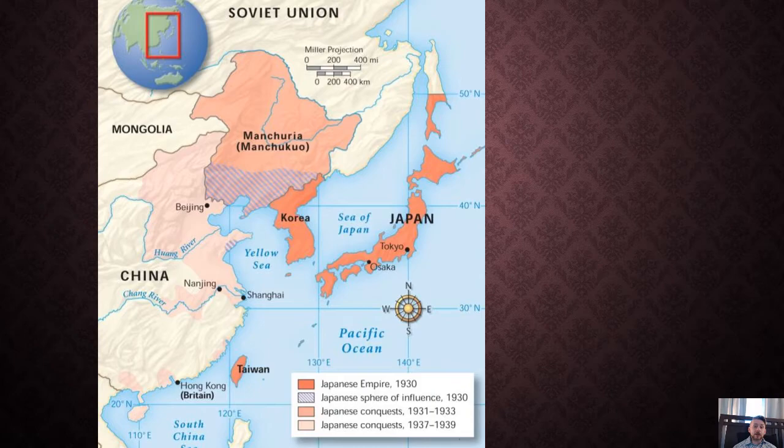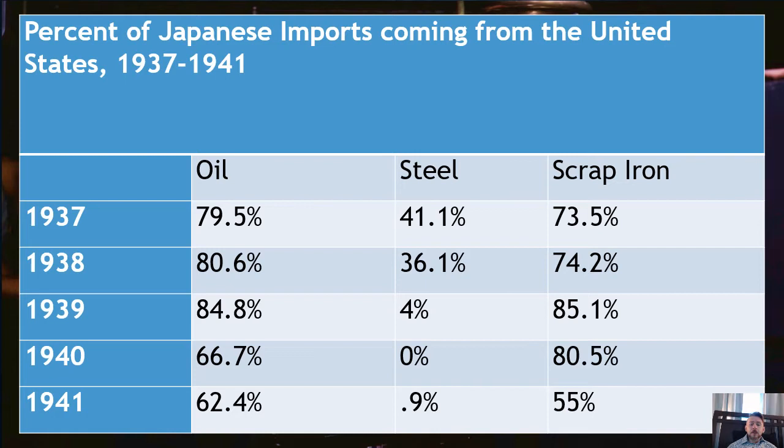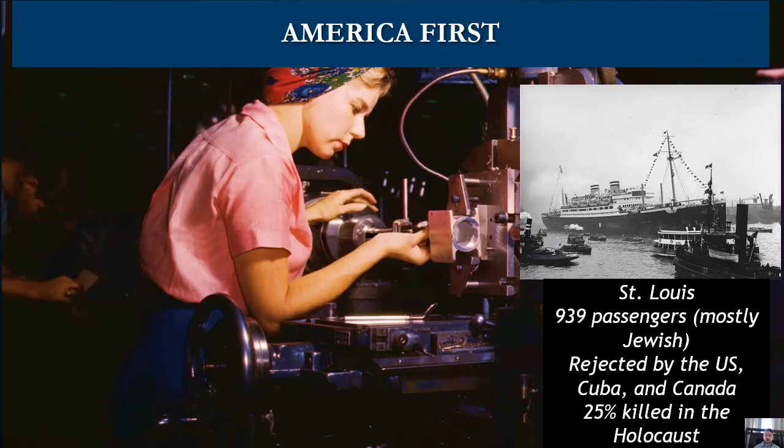This chart details the percent of Japanese imports coming from the United States: 79%, 80%, 84% of their oil — slowing down by 1940, but we're still fueling them — as well as steel and scrap iron up until 1941. So the Japanese depended on American products in order to be aggressive.